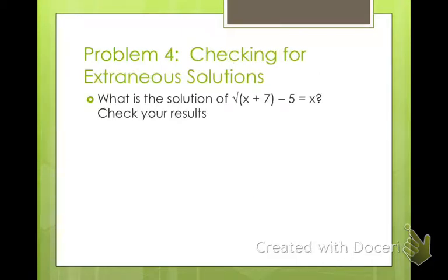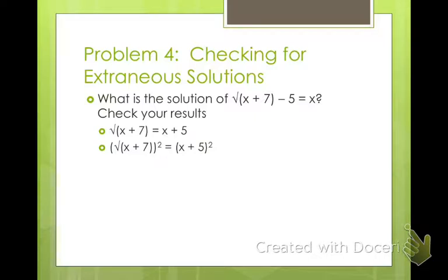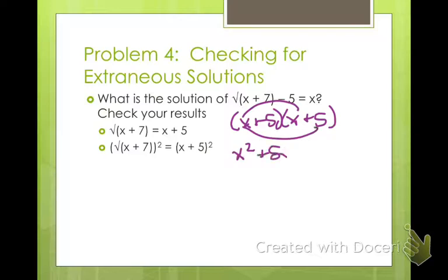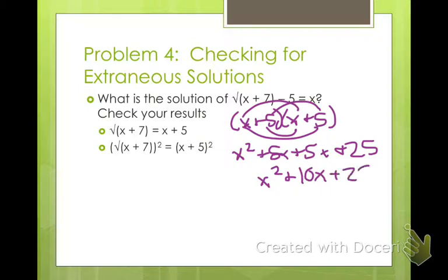We also need to check for extraneous solutions — sometimes you'll get solutions that look correct but aren't actually solutions. For this problem, we want to get the square root by itself, so we start by adding 5 to both sides. Then to get rid of the square root we square both sides, but don't forget: when you square a binomial you're actually FOILing. So we have x plus 5 quantity squared, which FOIL gives x squared plus 5x plus 5x plus 25, so the right side is x squared plus 10x plus 25, equal to x plus 7.